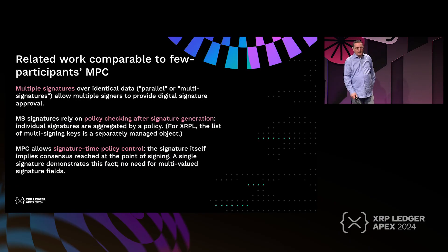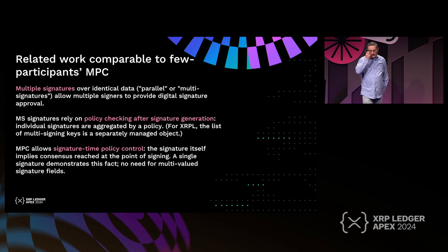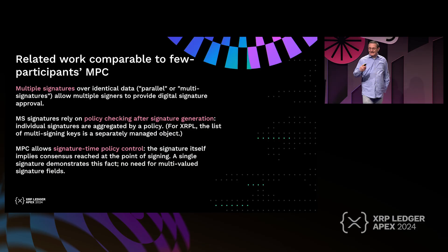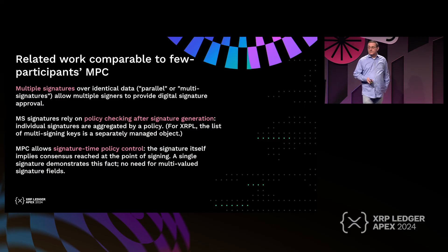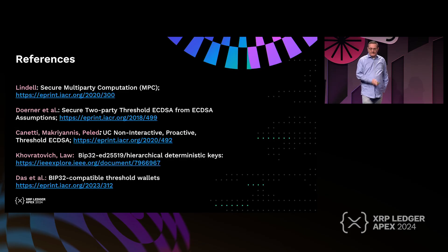Multi-signature is actually supported by XRP Ledger. The difference from MPC is that with multi-signature, policy and quorum checking is embedded in the signature data and evaluated at verification time — you get a response signed by some signers from a trusted list, and policy is checked at evaluation. With MPC, all policy enforcement happens during signature construction, so the output is a single standard signature with no multisig fields required.